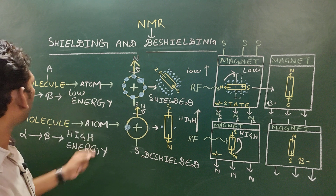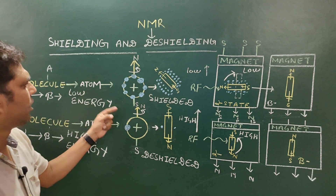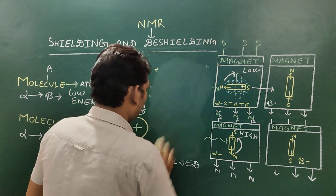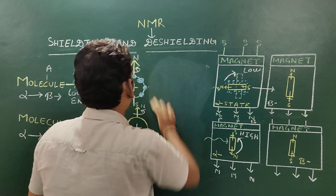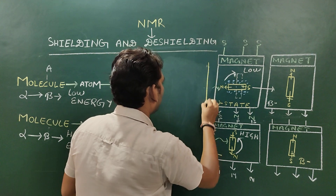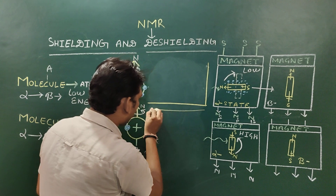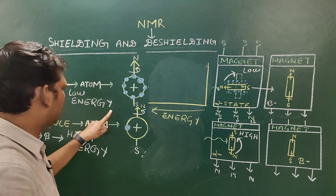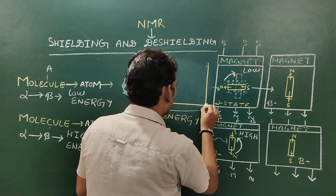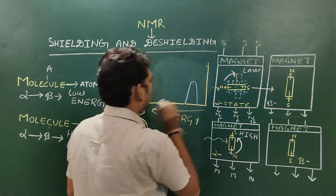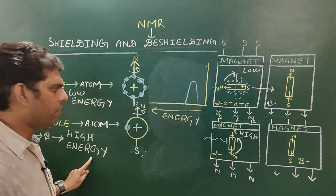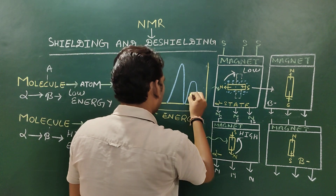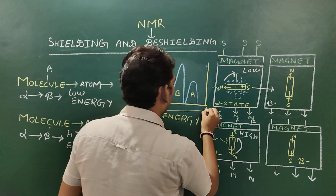Let's draw a graph. This is the graph with the increasing order of energy on the axis. The shielded molecule requires a very small amount of energy, so its peak is low. The deshielded molecule requires a very high amount of energy, so its peak is high. This peak is for molecule A and this peak is for molecule B.